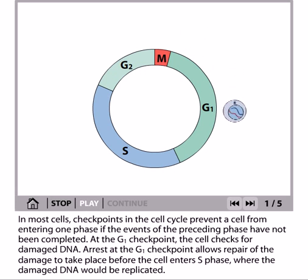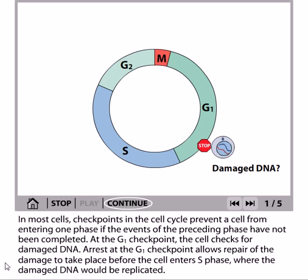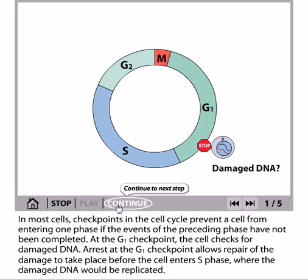In most cells, checkpoints prevent a cell from entering one phase until events in the preceding phase have been completed. At the G1 checkpoint, the cell checks for damaged DNA. Arrest at the G1 checkpoint allows repair of damaged DNA to take place before the cell enters S phase. We normally have three major checkpoints: the G1/S checkpoint, the G2/M checkpoint, and the mitotic checkpoint which lies between metaphase and anaphase.